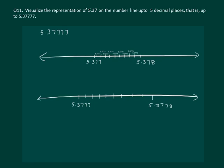On magnification the number line looks like this and the first division represents 5.37771 and so on, and the seventh division will represent 5.37 bar up to 5 decimal places.